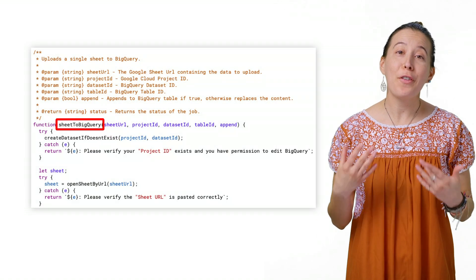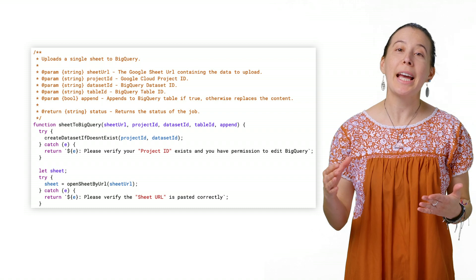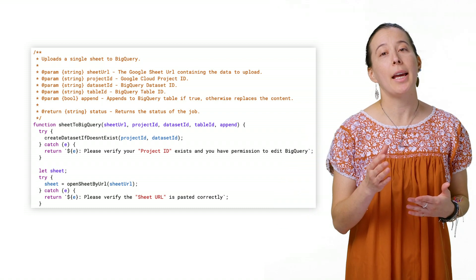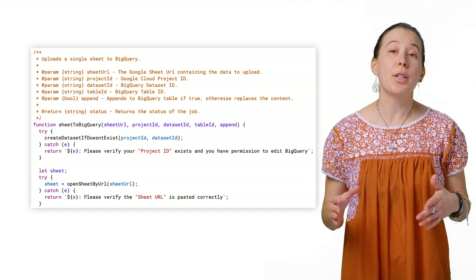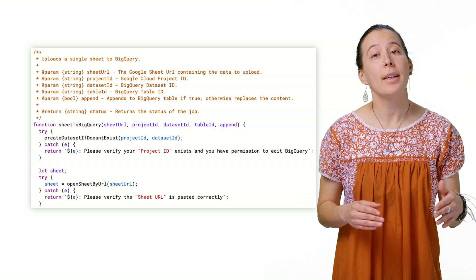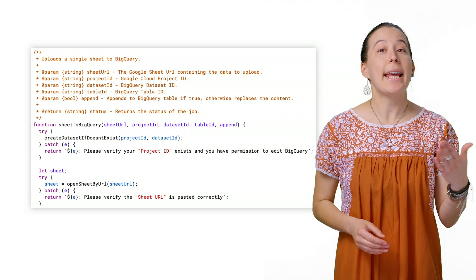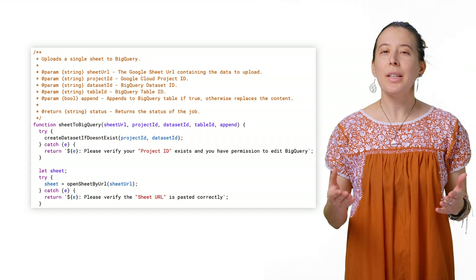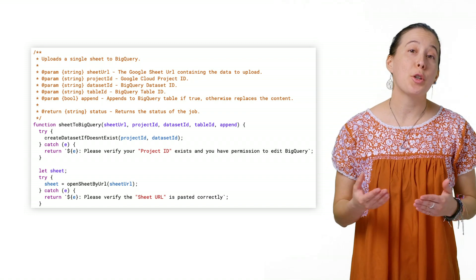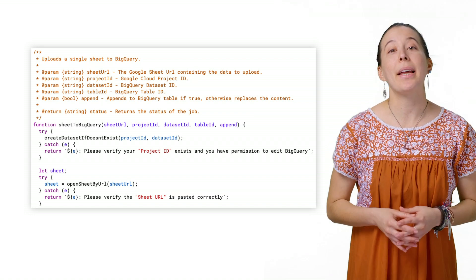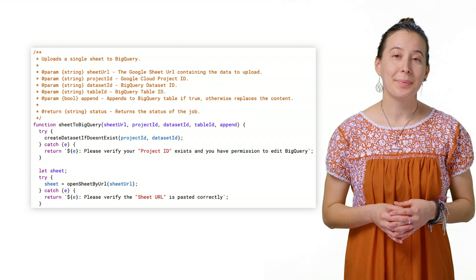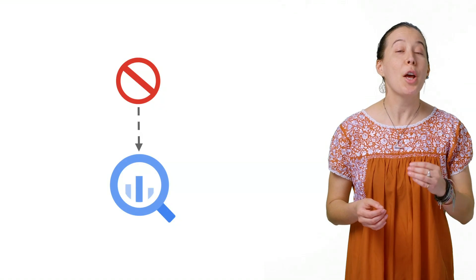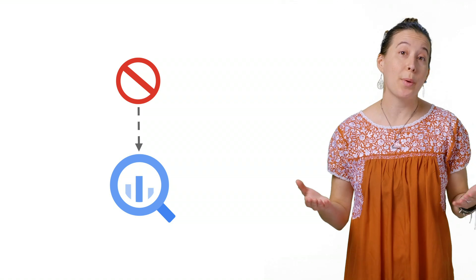The function Sheets to BigQuery uploads the data from your spreadsheet into BigQuery by passing all the necessary parameters such as the URL of the sheet, the project ID, the data set, and table name in BigQuery, as well as confirmation if a sheet should be a new table or instead append it to an existing one. Do note you must have at least edit permissions to the BigQuery data set you want to write values to.